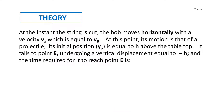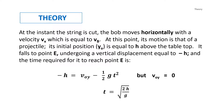At the instant the string is cut, the bob moves horizontally with velocity v sub x, which equals v sub B. At this point, its motion is that of a projectile. Its initial position y sub 0 equals h above the tabletop. It falls to point E undergoing a vertical displacement equal to negative h, and the time required to reach point E satisfies: negative h equals v sub y times t minus one-half g t squared. Since the initial vertical velocity is zero, time t equals the square root of two times the height of the blade divided by the acceleration due to gravity.